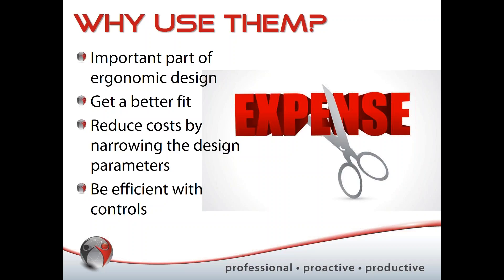Here's what happens: the recommendation comes — we have people bending, so we say raise the working height. Maintenance goes out and raises it. But because the anthropometric component wasn't brought into the thought process, the height ends up too high. Now we have people with raised shoulders. After hurting people's backs, we're now hurting their shoulders. We have to go back and lower it again. It becomes costly and creates a loss of time and productivity. If we use anthropometrics up front, we can say we need it raised three inches rather than six or ten — being precise and efficient with our controls.